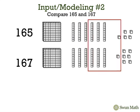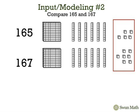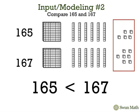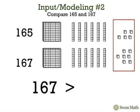So finally, we'll look at the ones place. We have 5 compared to 7. 5 is less than 7, so 165 is less than 167. We could also write that 167 is greater than 165.